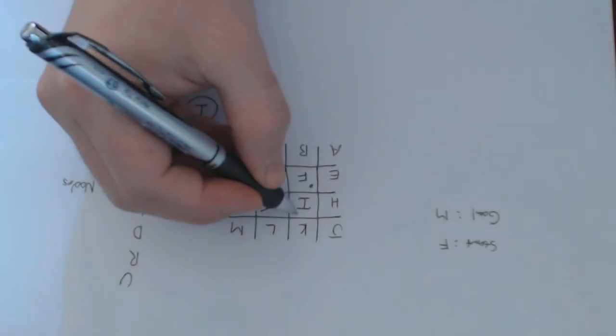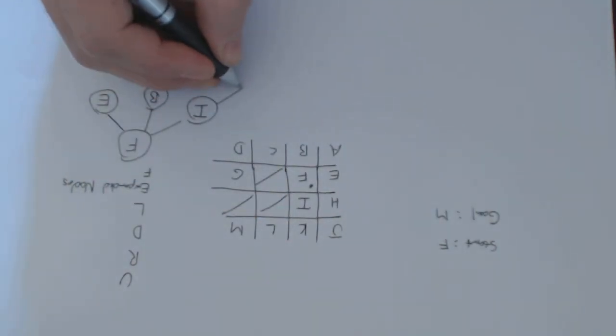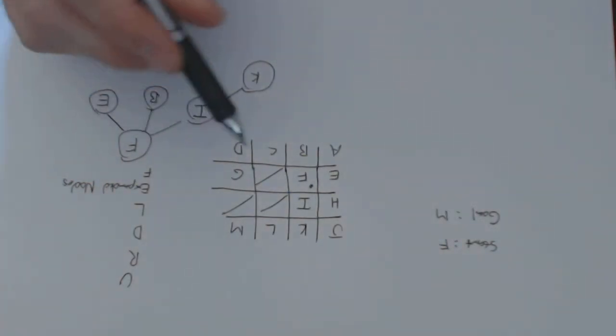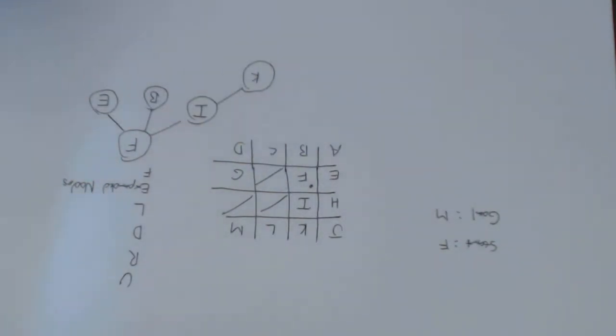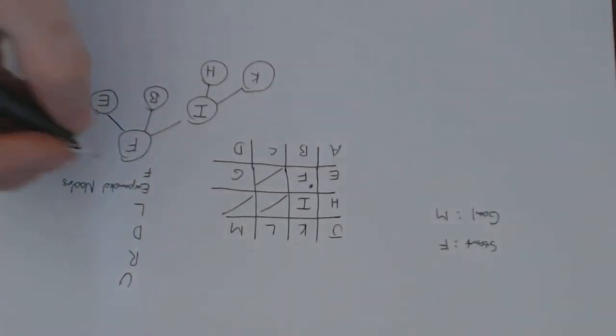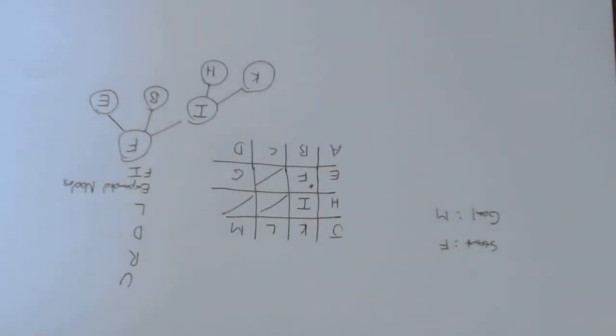So with I, if I expand up from I, I'm going to get K. I can't expand to the right, so I don't get a node. Down, I would get F, but F is already on the expanded nodes list. And because we want breadth-first search to be optimal, we won't re-expand it. We've already explored that set. And then left, which would give me H. So expanding I gives me K and H, and I add I to my expanded nodes list.